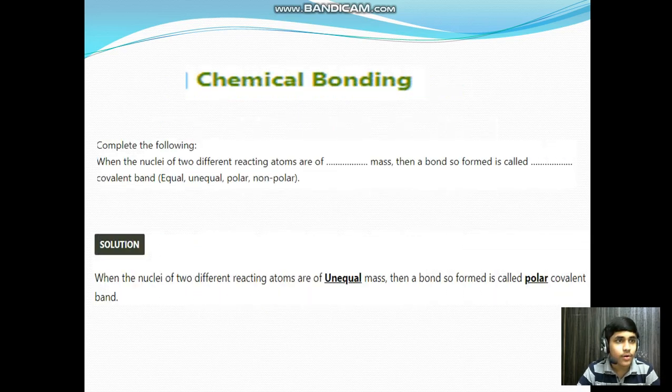Chapter: Chemical Bonding. When the nuclei of two different reacting atoms are of dash mass, then a bond so formed is called dash-valent bond. Solution: when the nuclei of two different reacting atoms are of unequal mass, then a bond so formed is called polar-covalent bond.